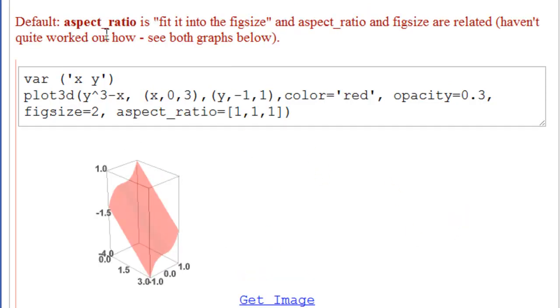The default aspect ratio, there's an underscore there, seems to be fitted into the figure size. And aspect ratio and figure size are related. I haven't quite worked that out. So you'll have to try different things. So here we've done the same thing as before. Except we've added aspect ratio equal to. Notice these are brackets, not parentheses. One, one, one. Which draws your figure to scale.